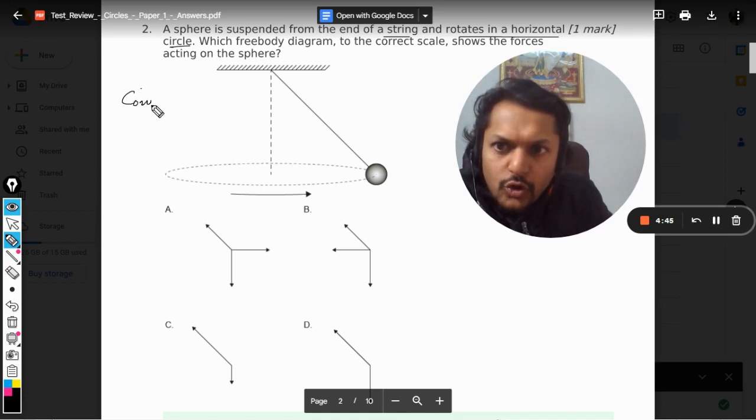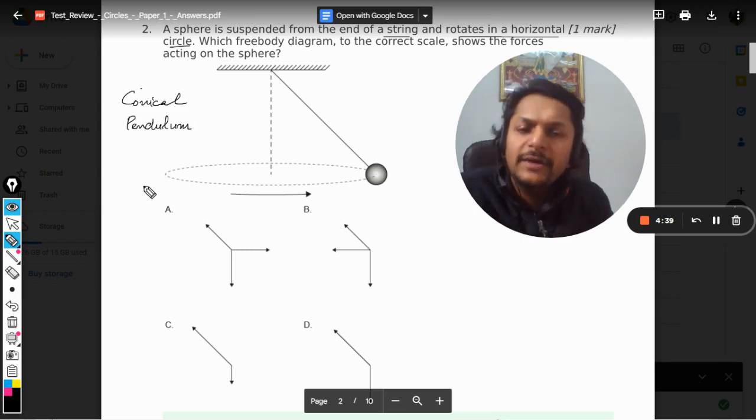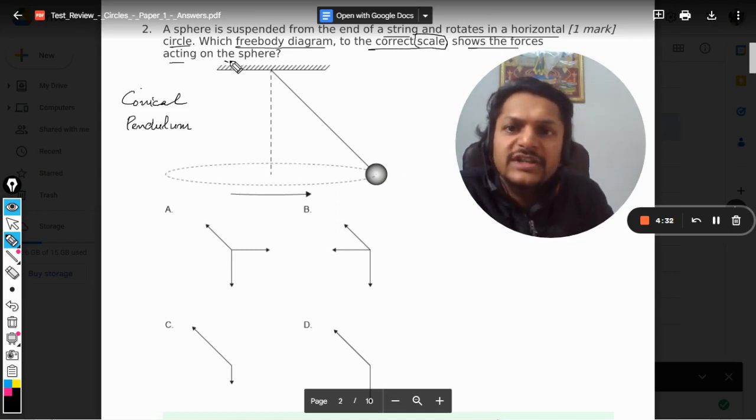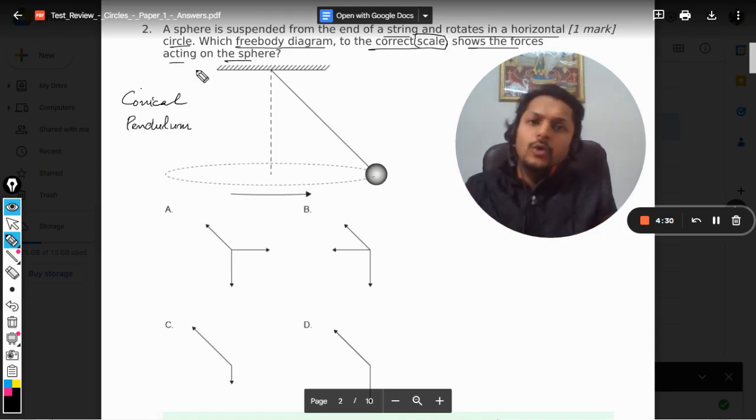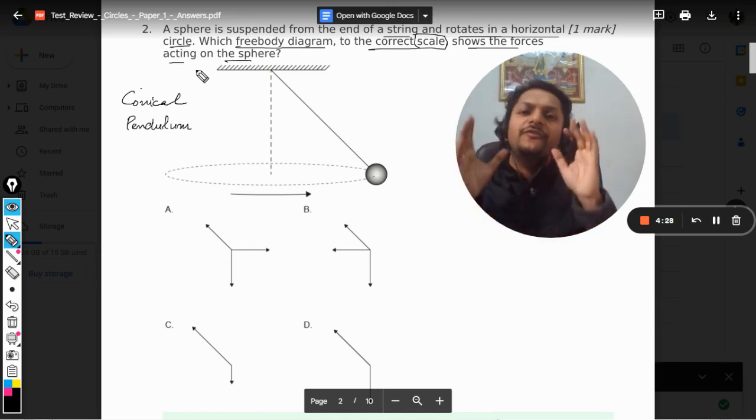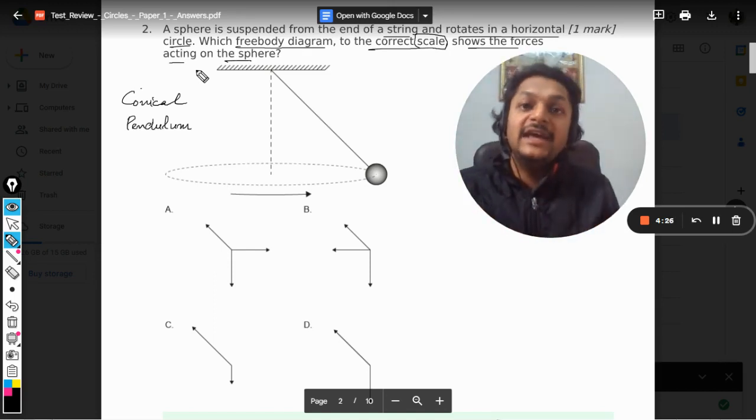Now, which free body diagram to the correct scale shows the forces acting on this sphere? So first of all, we have to make a free body diagram here, and then we have to talk about the scale also - which force is bigger and which force is lesser.